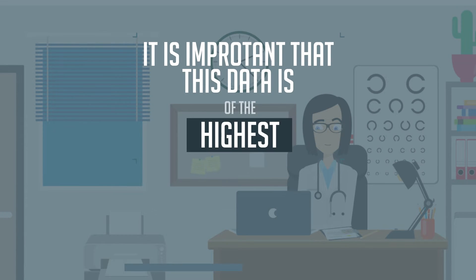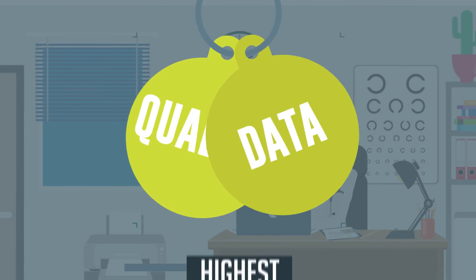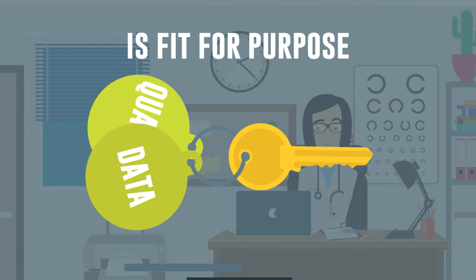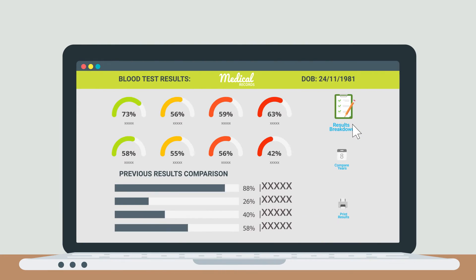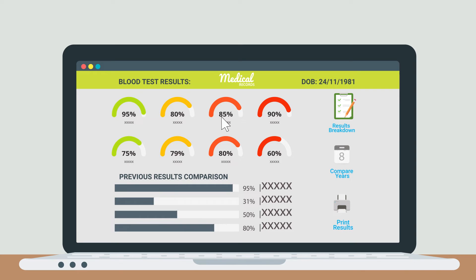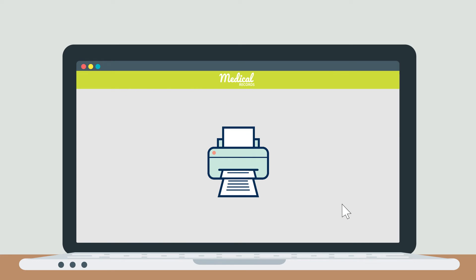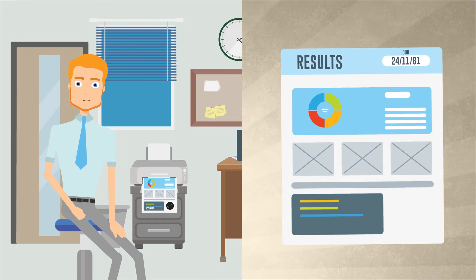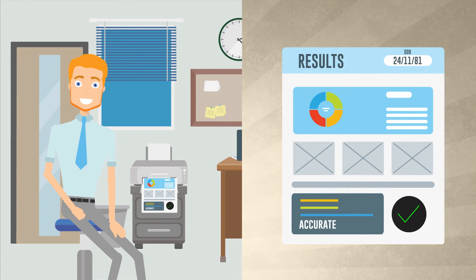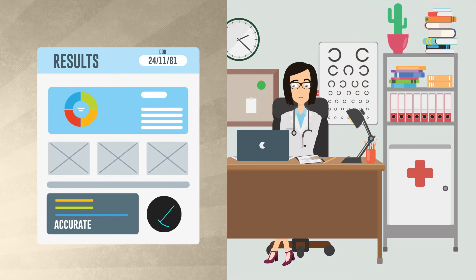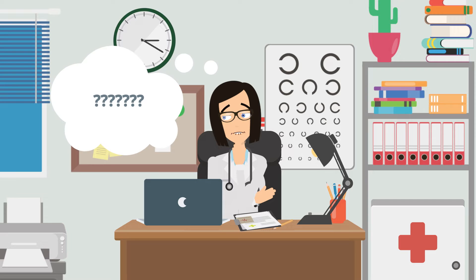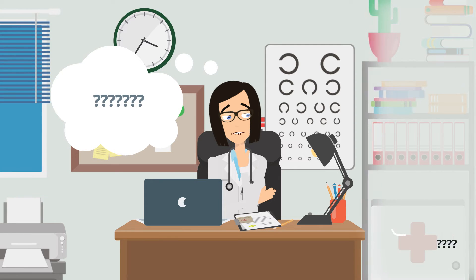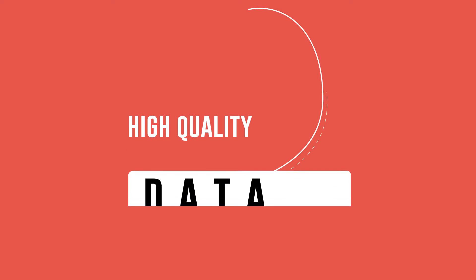In addition, this information can be used for monitoring diseases, planning services, informing health policy, and undertaking research. It is important that this data is of the highest possible quality to ensure that it is fit for purpose. For example, if a patient has blood tests done, the results need to be returned to the doctor quickly and they need to be accurate and relevant so the doctor can use this information to diagnose the patient's condition. Where laboratory results are accurate, the doctor will be able to decide how best to treat the patient.